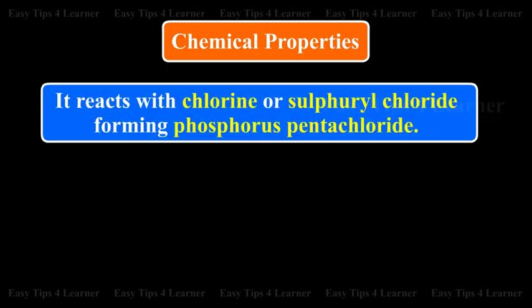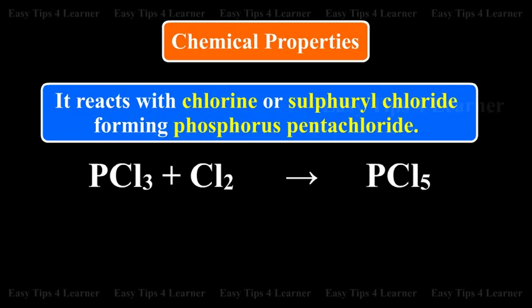It reacts with chlorine or sulfuryl chloride forming phosphorus pentachloride. PCL3 plus Cl2 gives PCL5.